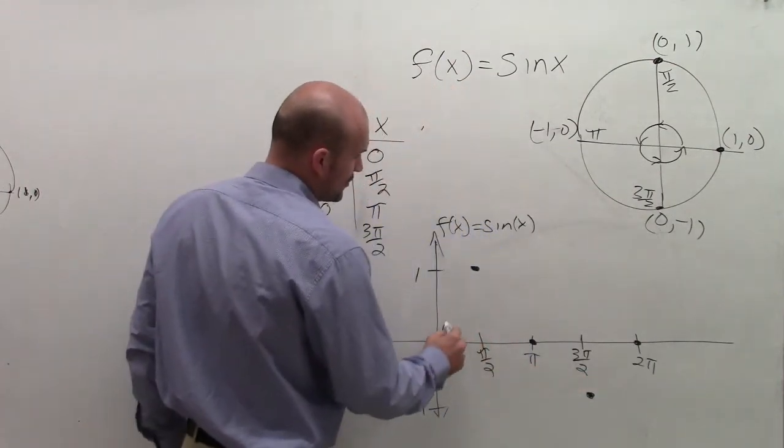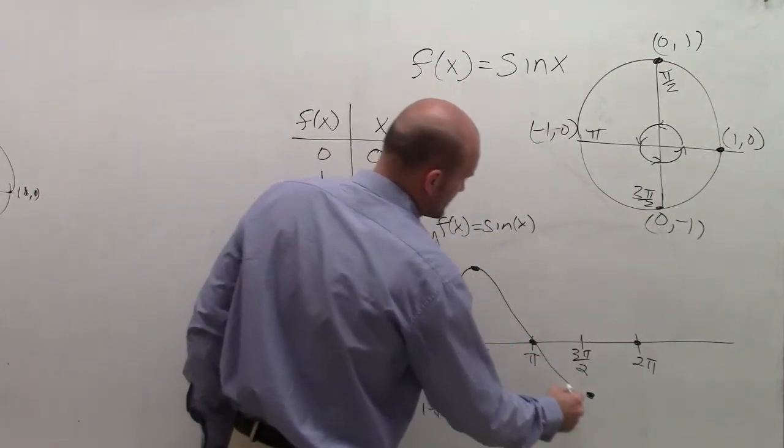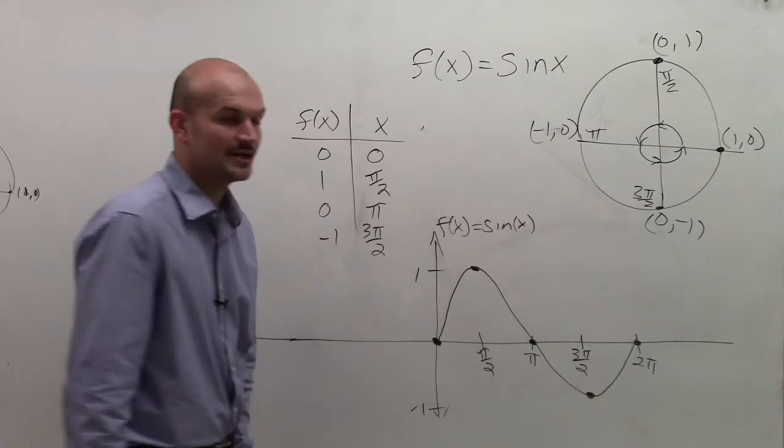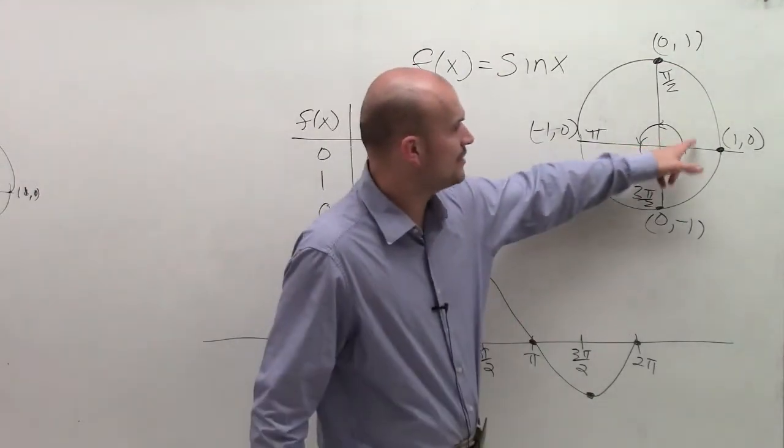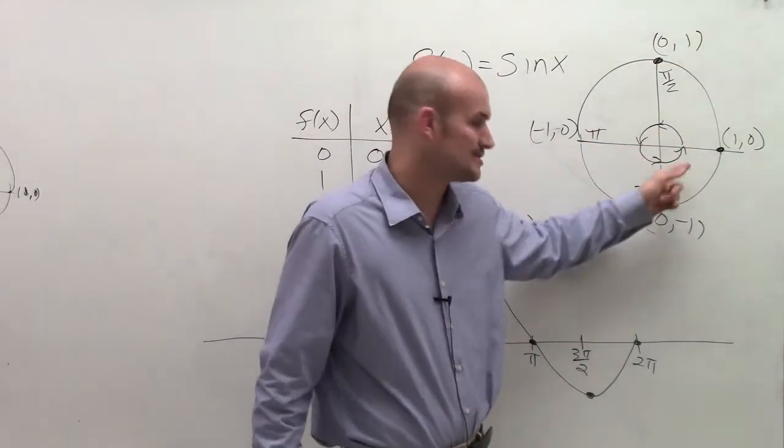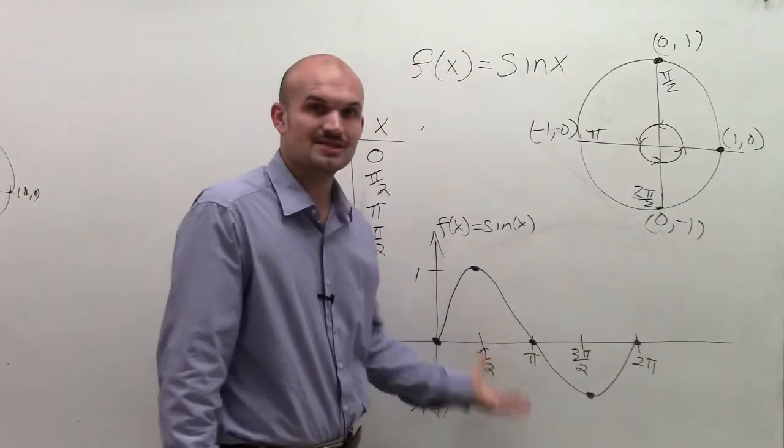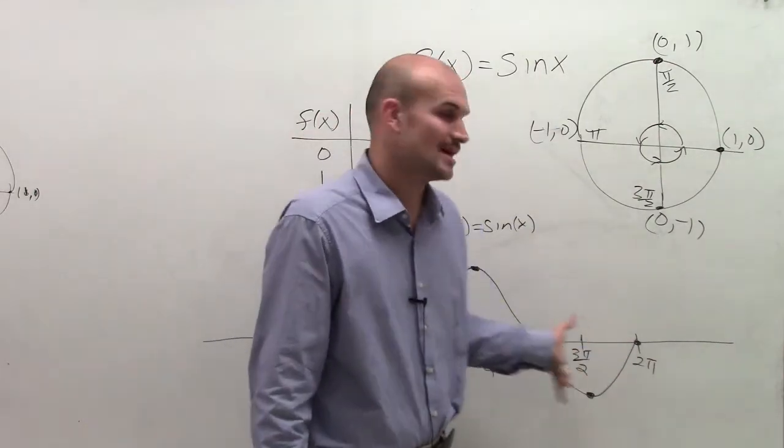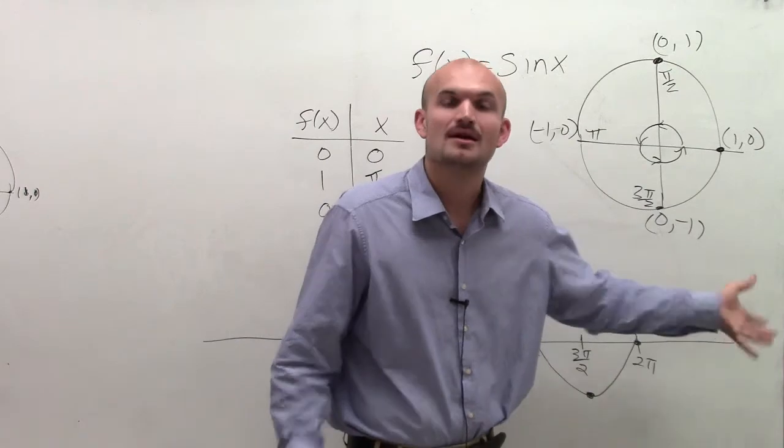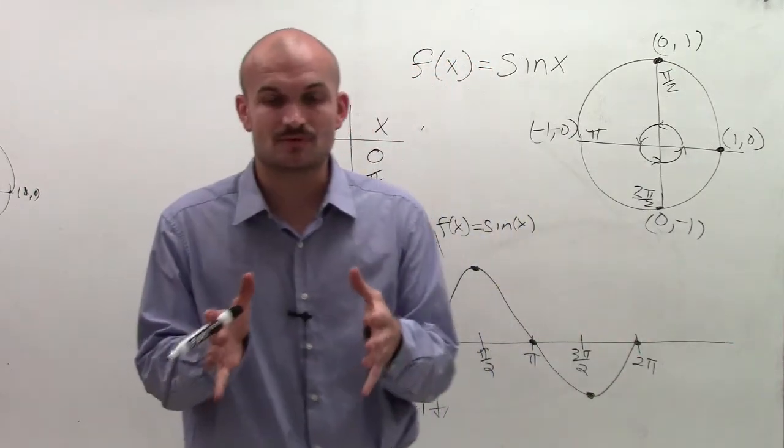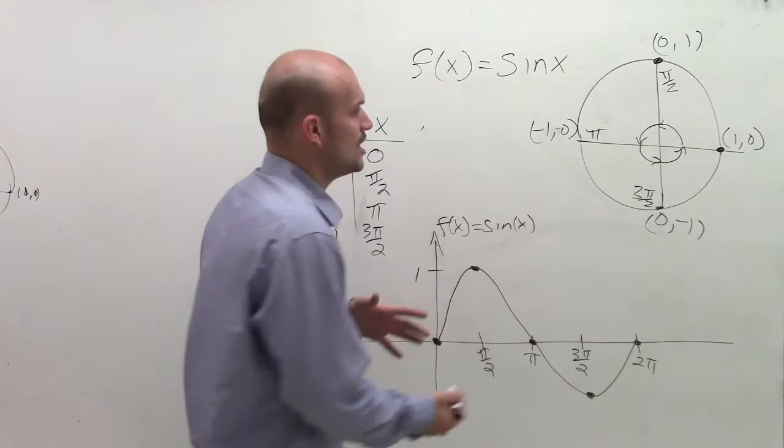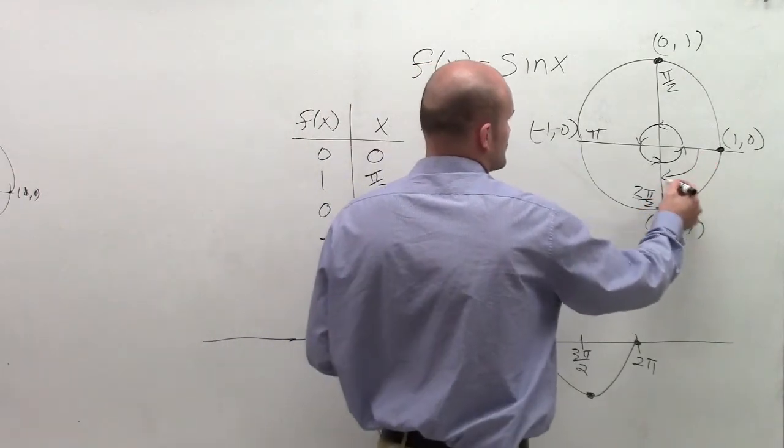So what I can do is now I'm going to connect all of these points to create my sine curve. And one thing you need to know that, remember, angles can keep on going around and around the unit circle. So what's going to happen is this graph is going to keep repeating itself in this positive direction. But remember, angles aren't just restricted on the unit circle to go in the positive direction. We can also work with angles going in the negative direction.